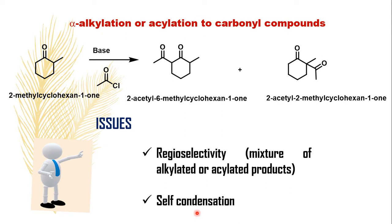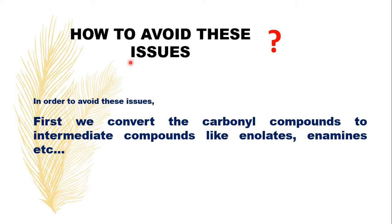This was discussed in the earlier video on basics of enolate or asymmetric aldol reactions. So, how to avoid these issues during alpha-alkylation or acylation of carbonyl compounds? In order to avoid these issues, you first have to convert the carbonyl compounds to intermediate compounds like enolates, enamines, etc. The enolates concept was discussed in earlier videos; now we are going to discuss about enamines.